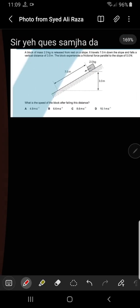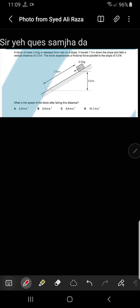A block of mass 2 kg is released from rest on a slope. It travels 7 meters down the slope and falls a vertical distance of 3 meters. The block experiences a friction force parallel to the slope of 5 Newtons.